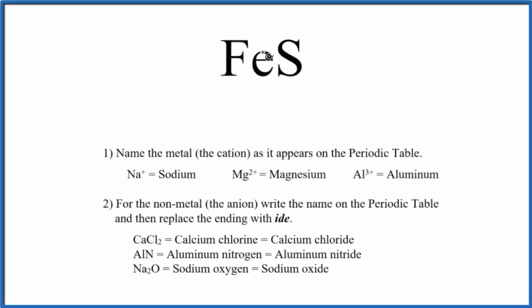To write the name for FeS, we first need to recognize that we have a metal and a nonmetal. When we have a metal and a nonmetal, we'll name this as an ionic compound, specifically because they're just two different elements, a binary ionic compound.